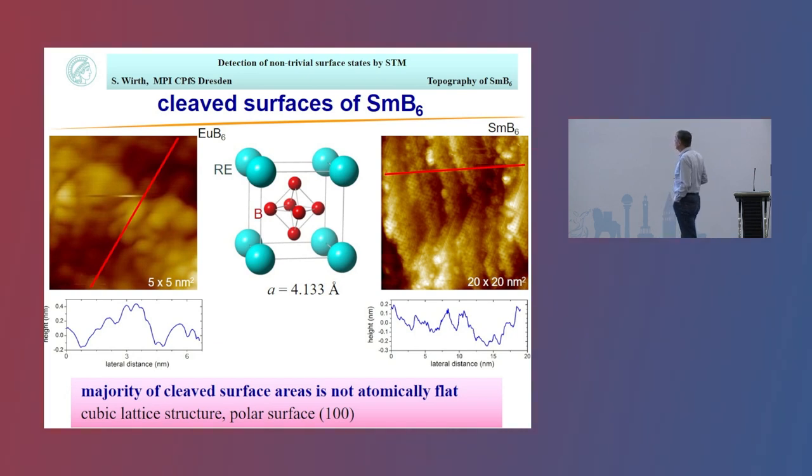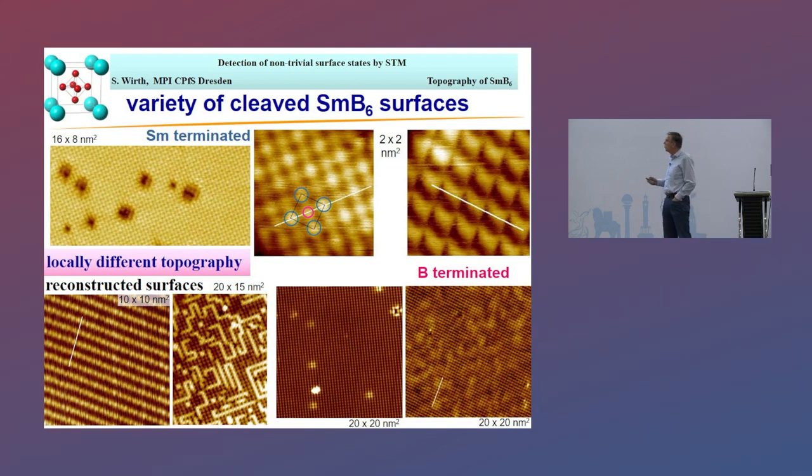In consequence, this is what we mostly see. These topographies are not atomically flat, and I should emphasize, this is the vast majority of the surface areas we look at. So this is certainly not what we're aiming for. The individual atoms here have different environments and it's not necessarily related to the samarium hexaboride we're interested in.